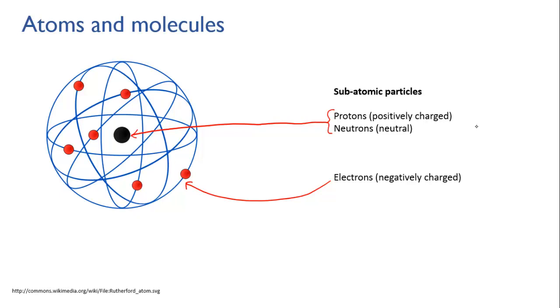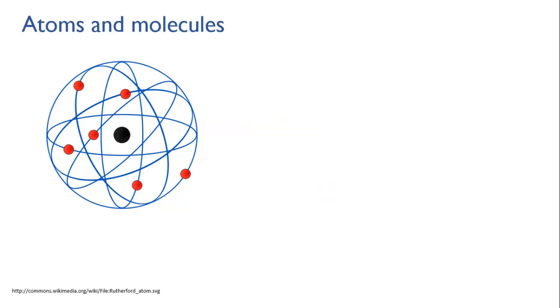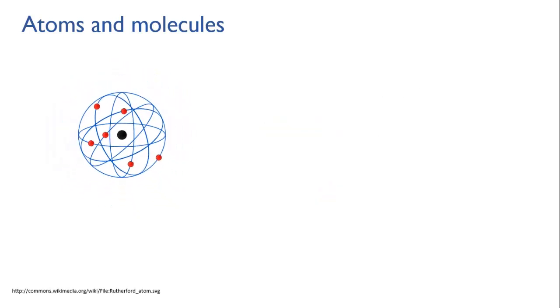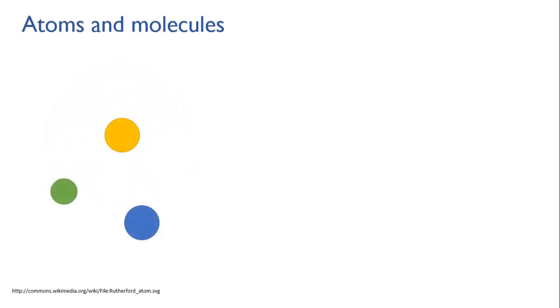For the moment, let's just represent single atoms as balls, since they are roughly spherical. Different atoms have different sizes and masses, and this has to do with the fact that they're made of different numbers of protons, neutrons, and electrons. So some are lighter and some are heavier, some are bigger and some are smaller. As I said, we'll go into that in detail later on.